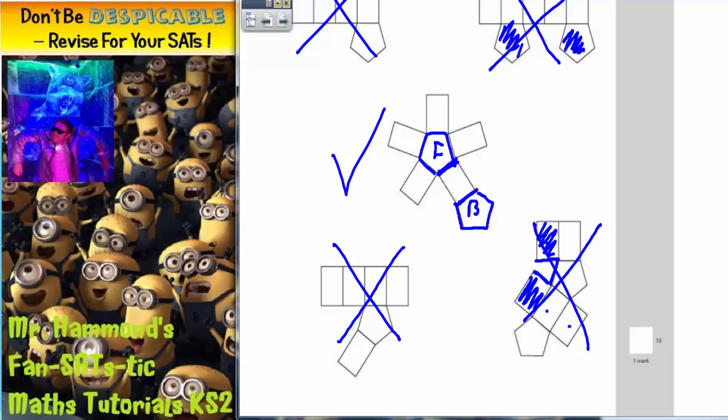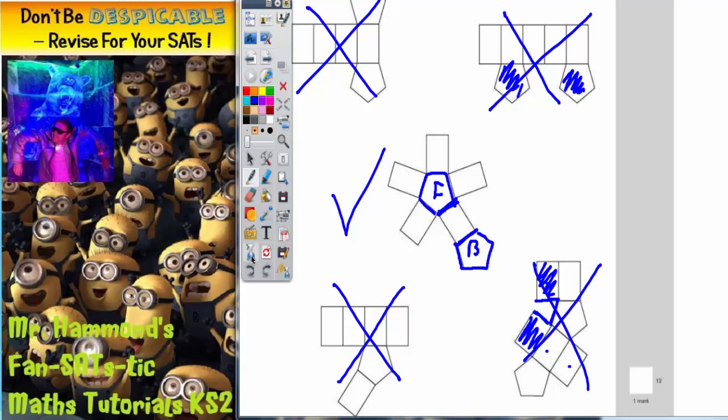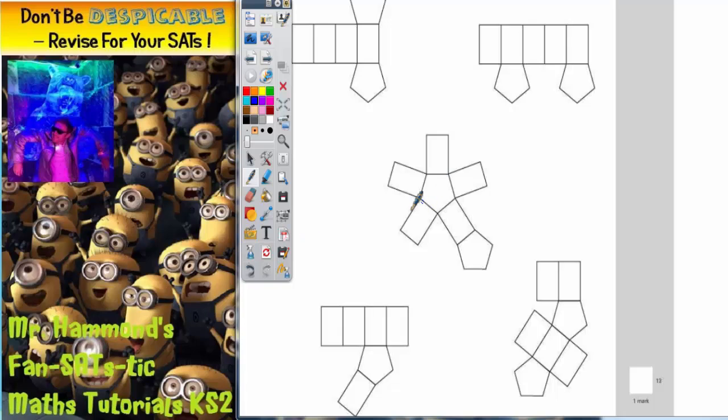The one in the middle is the only one that is going to work to make our pentagon. So that's the one we need to tick. Just to be clear, let's rub everything else out. And we're saying that it's the middle one that is the correct answer.